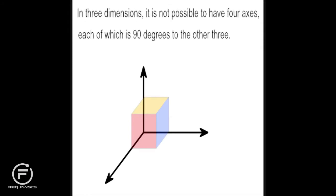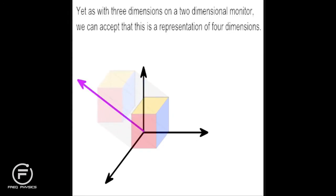In three dimensions, it is not possible to have four axes, each of which is 90 degrees to the other three. Yet as with three dimensions on a two-dimensional monitor, we can accept that this is a representation of four dimensions.